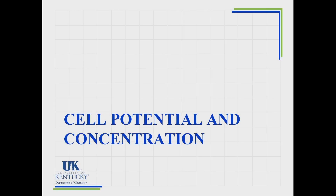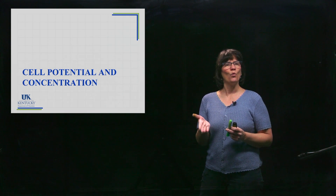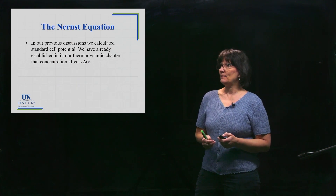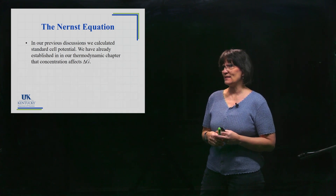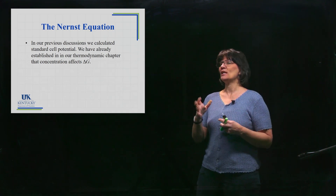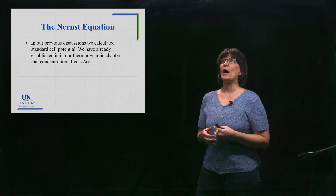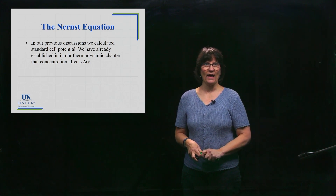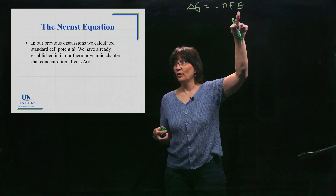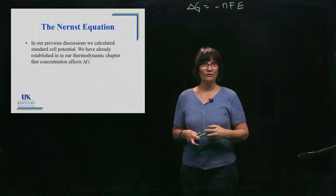In this section we're going to talk about cell potential when we're not running under standard state conditions. If you change the concentration from these standard concentrations of one molar solutions, then the cell potential will change. We're going to see how that will happen — this section is called the Nernst equation. We calculated standard cell potential and used it to calculate standard delta G and equilibrium constant. We know from thermodynamics that there was a change to our delta G with changing concentration, and that delta G is equal to the non-standard cell potential. So if changing the concentration affects delta G, it certainly affects E.